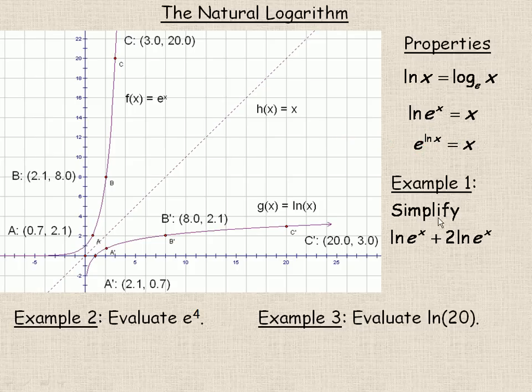So, in the first example here, we're asked to simplify the ln of e to the x plus 2 ln e to the x. Well, up here, this says the ln of e to the x equals x. So, this is just equal to x, and this would be 2 times x, because that's another x there. So, that actually would just simplify to 3x. So, this complicated ln e to the x plus 2 ln e to the x is actually equal to 3x. So, that's a simpler version of that ln expression.